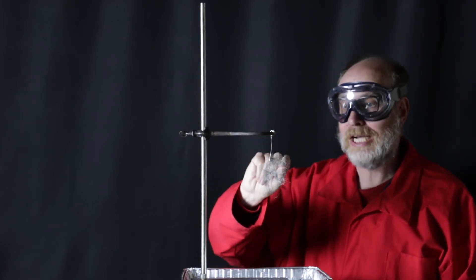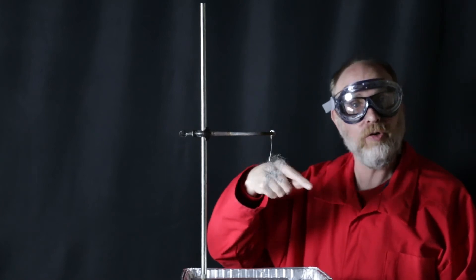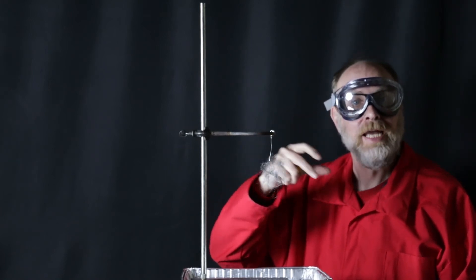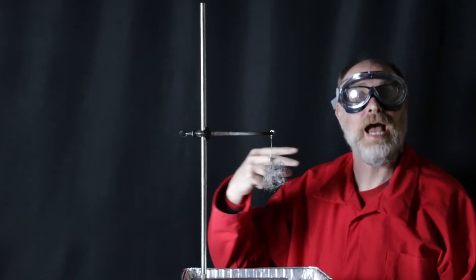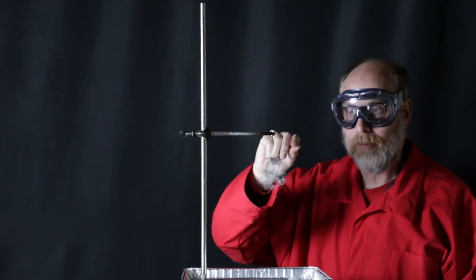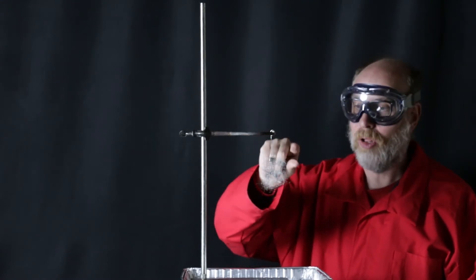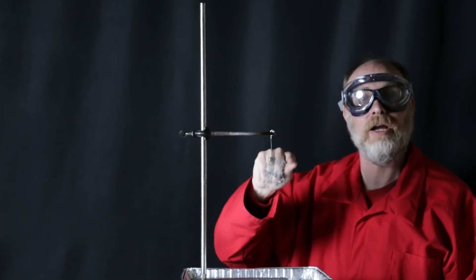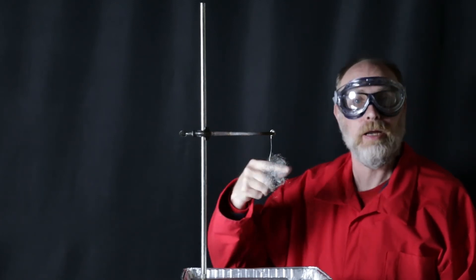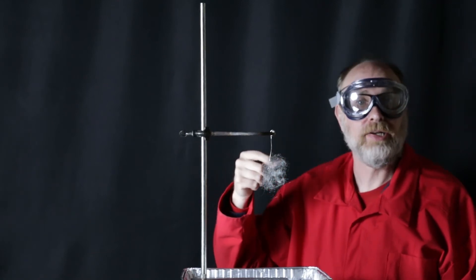We've talked about exothermic reactions before when we talked about elephant's toothpaste and things like that. The decomposition of hydrogen peroxide gives off heat. Well, this reaction, we're going to start it with the electrical energy, and then it's going to produce enough energy to sort of self-perpetuate itself. As that heat starts flowing down the strand, it's going to start the reaction again. So it's going to perpetuate itself the whole way through all of the strands until all of the iron in that steel wool have been converted to iron oxide.